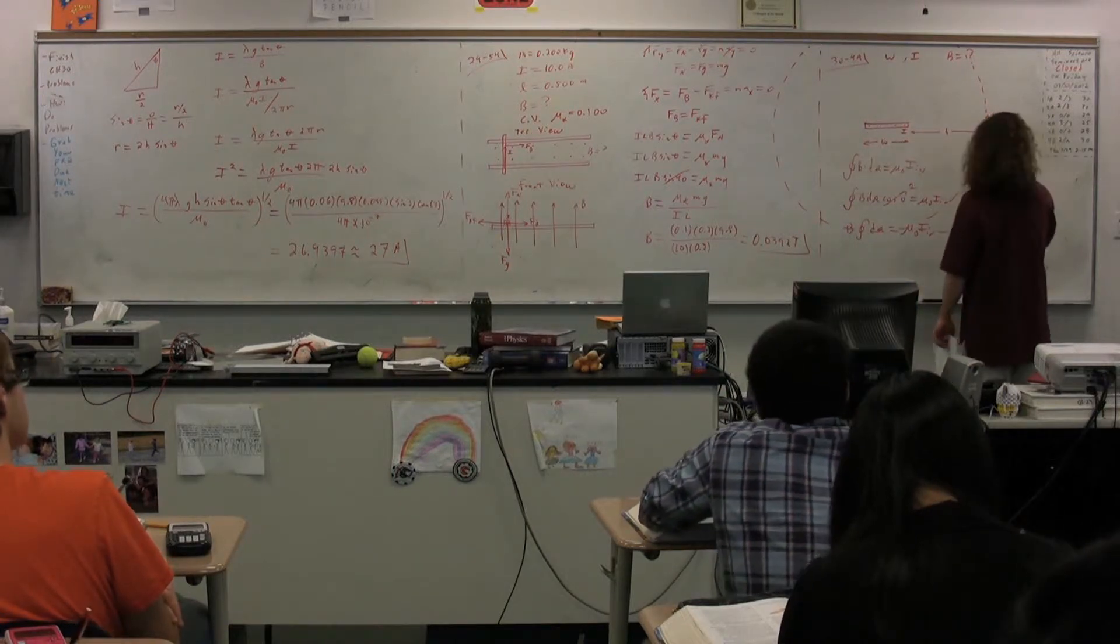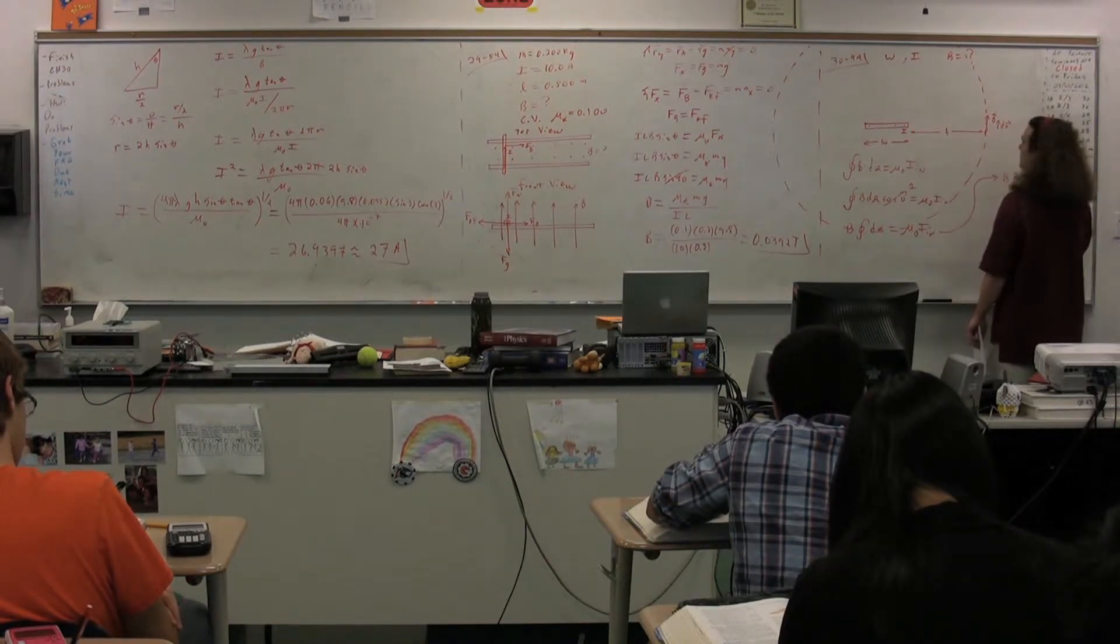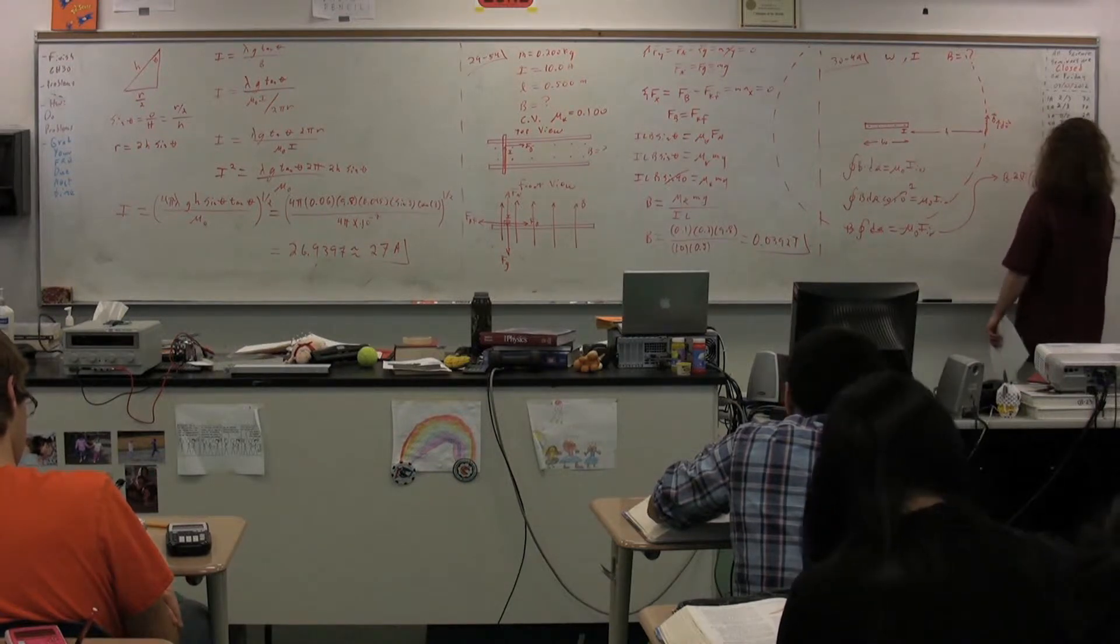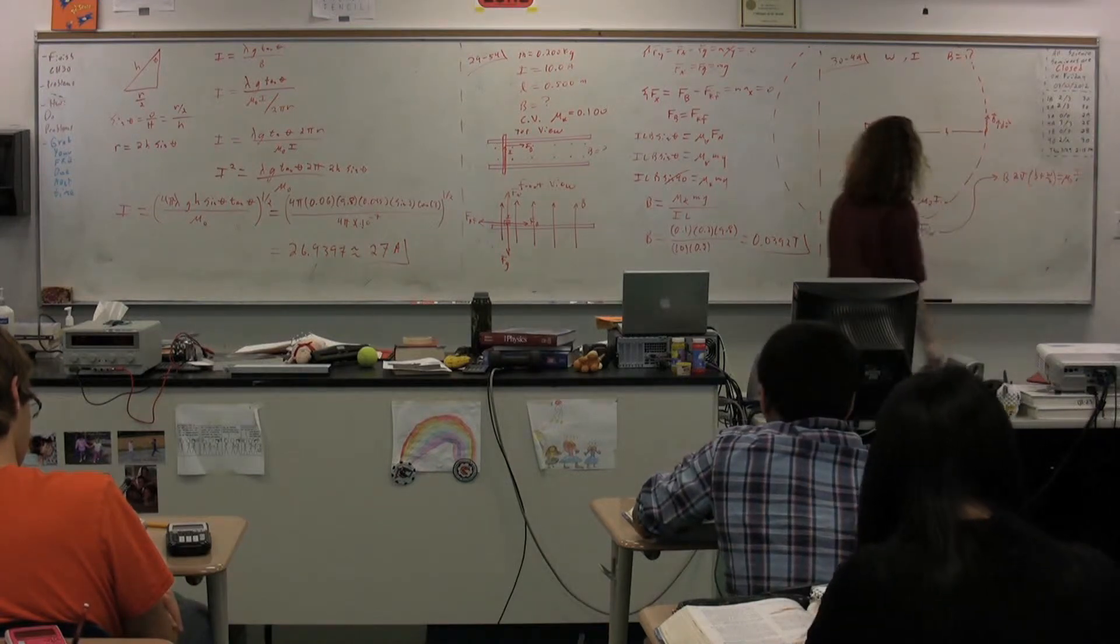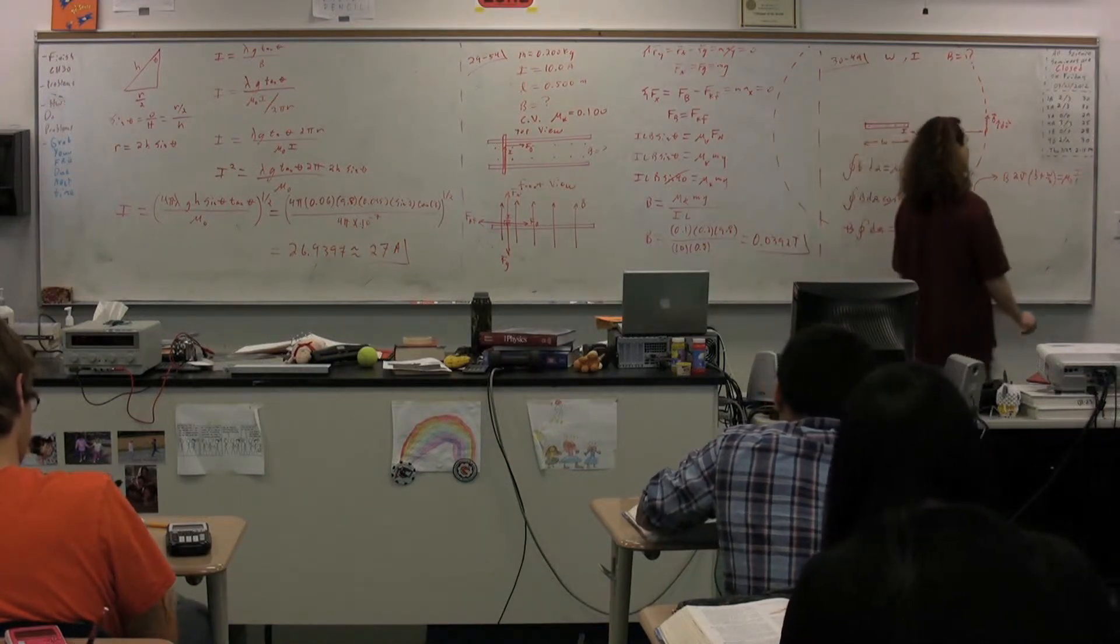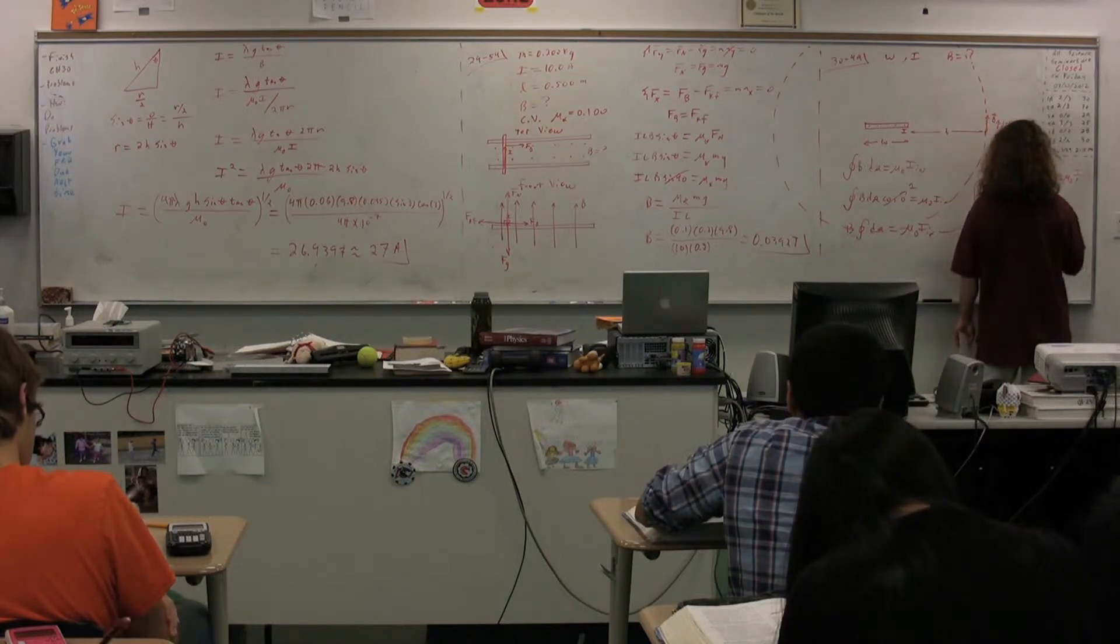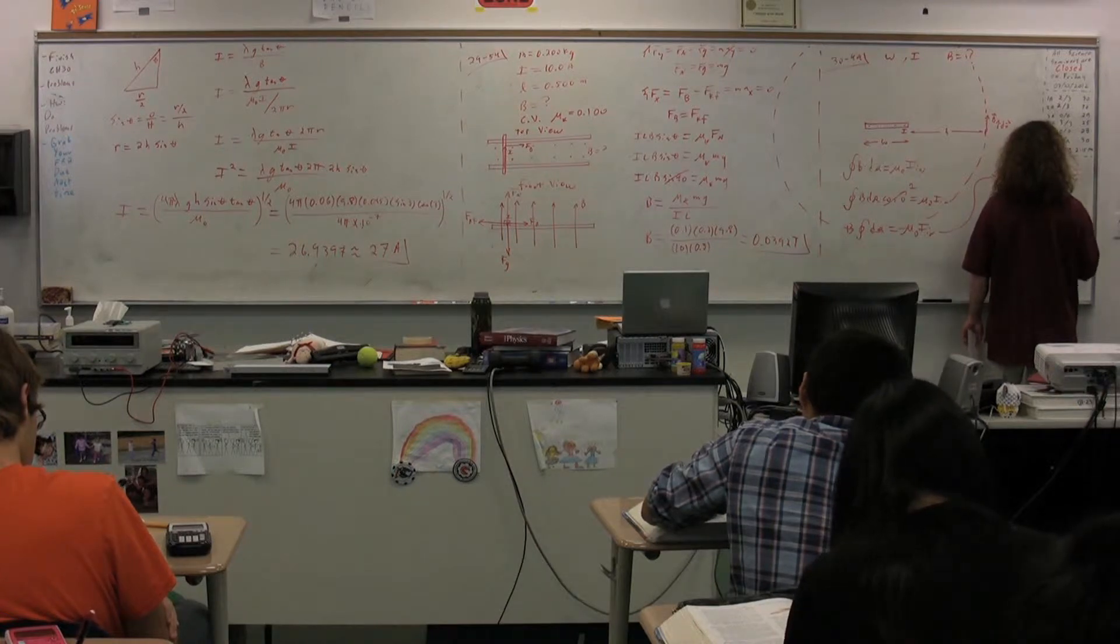And so, we get that B times 2 pi times, let's say, B plus W over 2 is equal to mu naught times the current. Now, the current on the inside is just the current on this particular wire. And so, the magnetic field equals mu naught I divided by 2 pi times B plus W over 2.